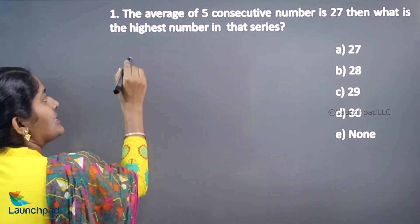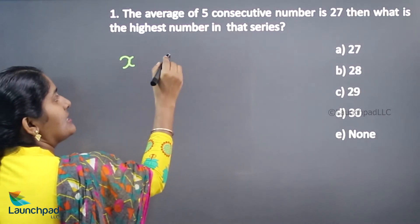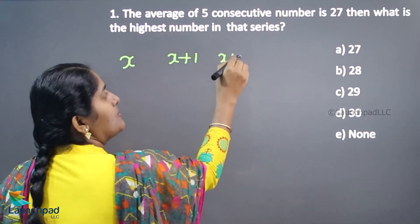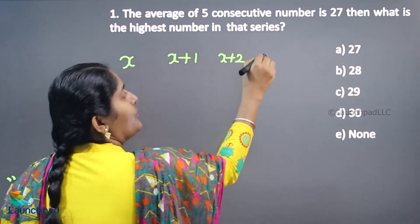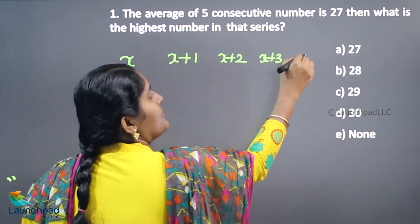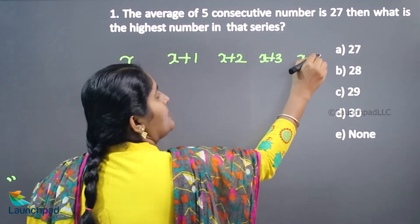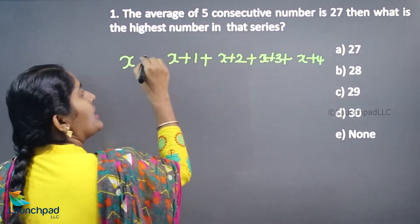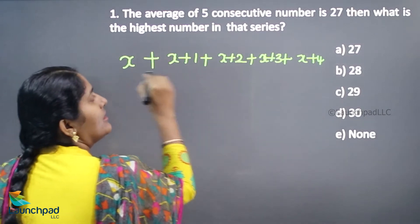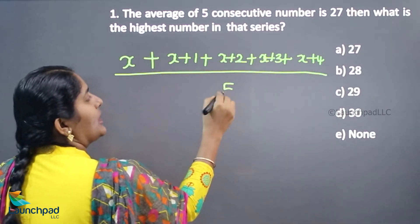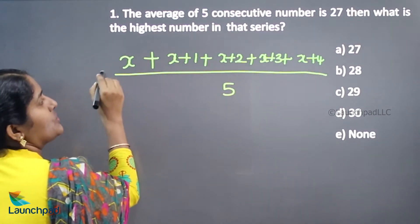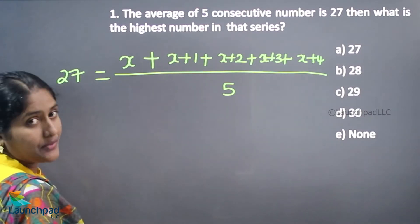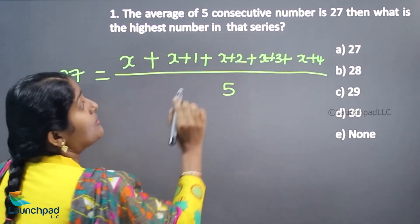We don't know what the numbers are, so we consider the first number as x, the second as x+1, the third as x+2, the fourth as x+3, and the fifth as x+4. Adding these 5 numbers and dividing by 5 gives the average value of 27.